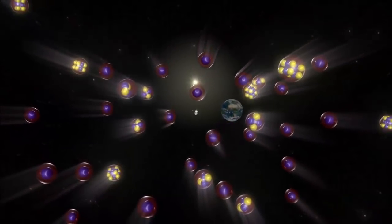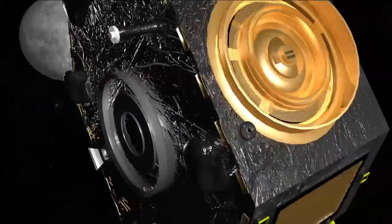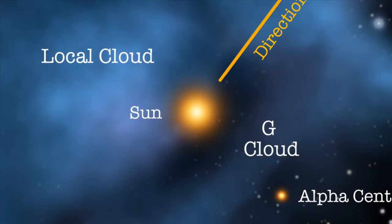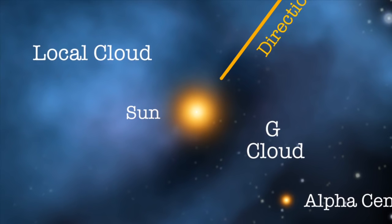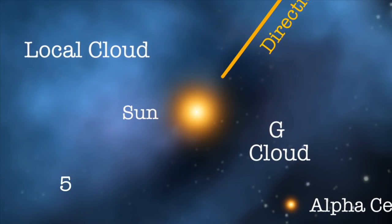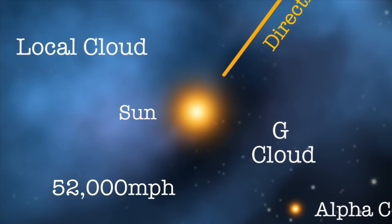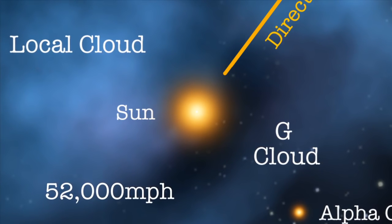The measurement of these atoms by IBEX has enabled scientists to get a better grasp on the environment around our solar system. The speed of the galactic wind registered around 52,000 miles per hour, which is about 12% slower than previously thought.